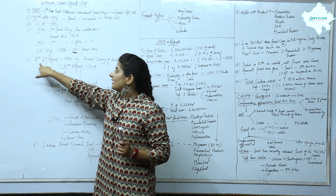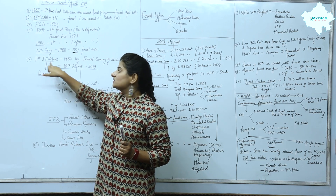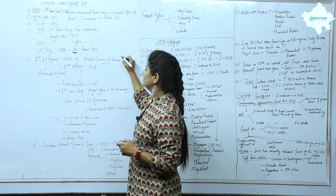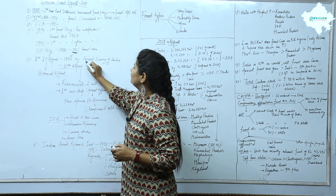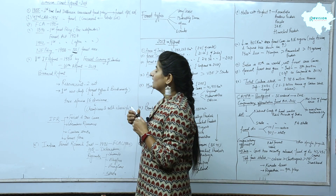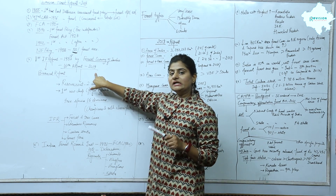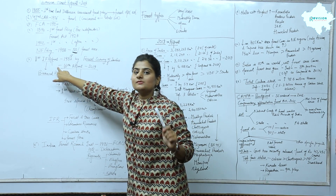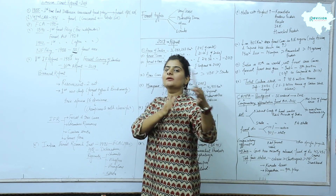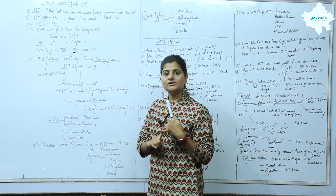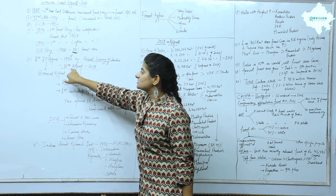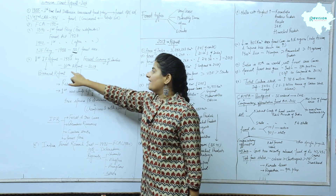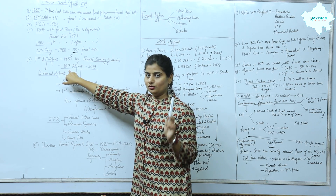Now let's talk about the Indian Forest Report. It was first published in 1987 by the Forest Survey of India. The 2019 report is the 16th report. The Indian Forest Report is a bi-annual report, meaning it comes every two years — not an annual report. It came in 2019, so the next will come in 2021.